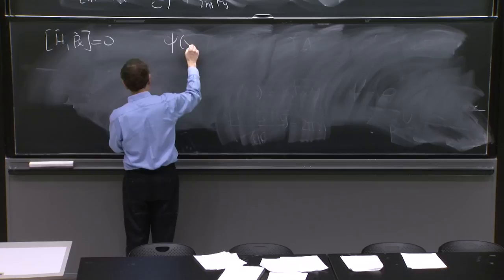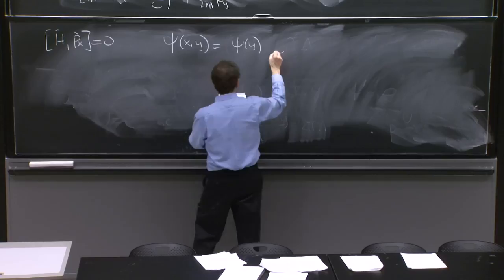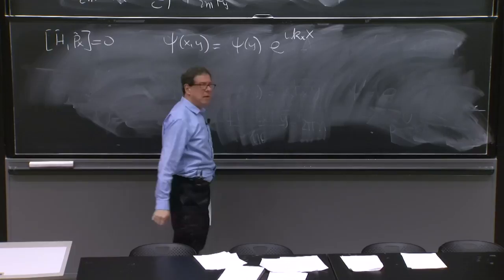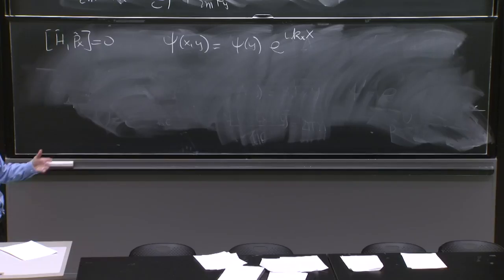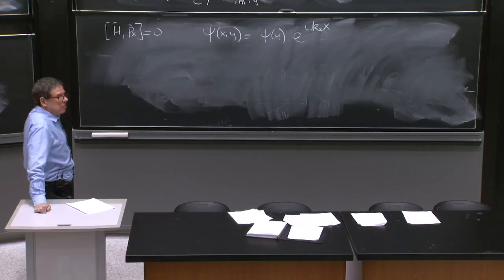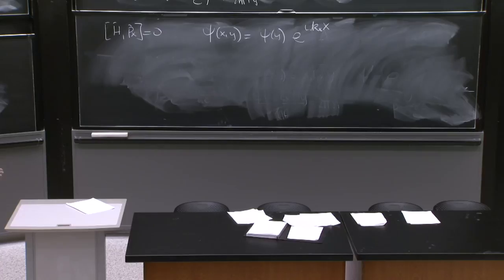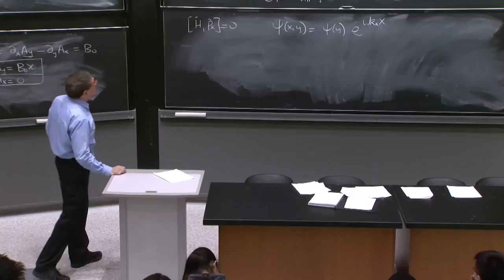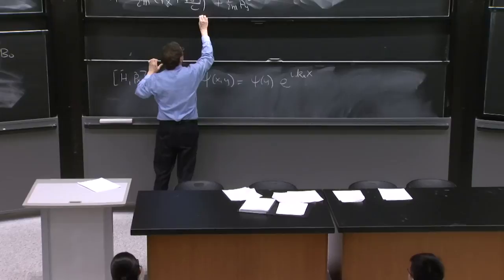So I will write my wave function of x and y as a wave function that depends on y times e to the i kx x. And it's already a little strange. We're looking for circular orbits, maybe. And the x dependence is really a little funny here. It's almost like plane waves in the x direction. So OK, well, it's a fact. It's true.